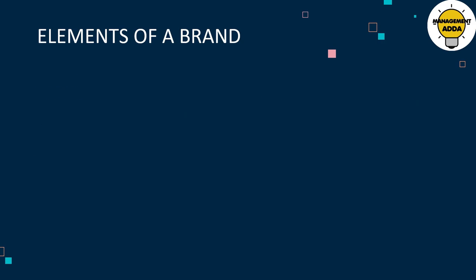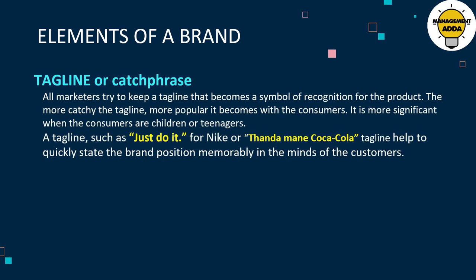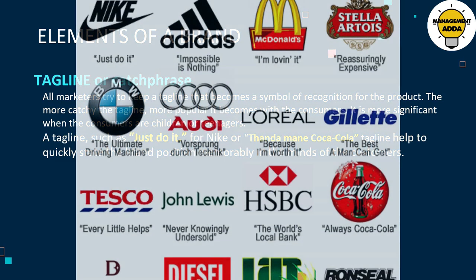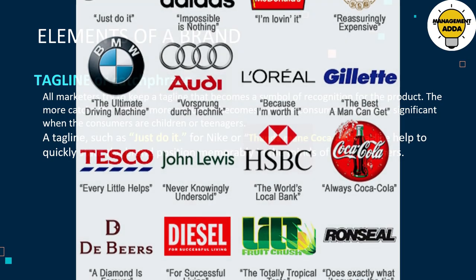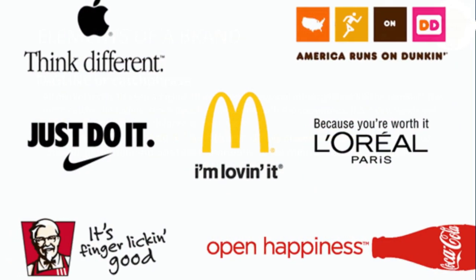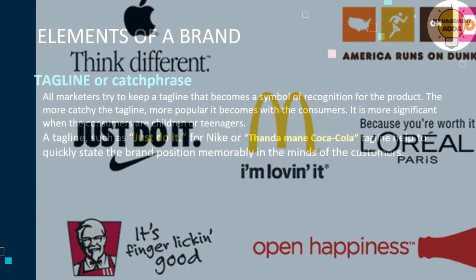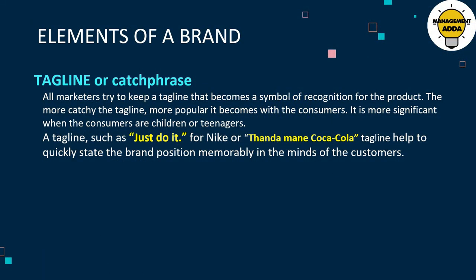The third element is tagline or catchphrase. All marketers try to keep a tagline that becomes a symbol of recognition for the product. The more catchy the tagline, the more popular it becomes among customers. This is especially significant when consumers are children or teenagers.